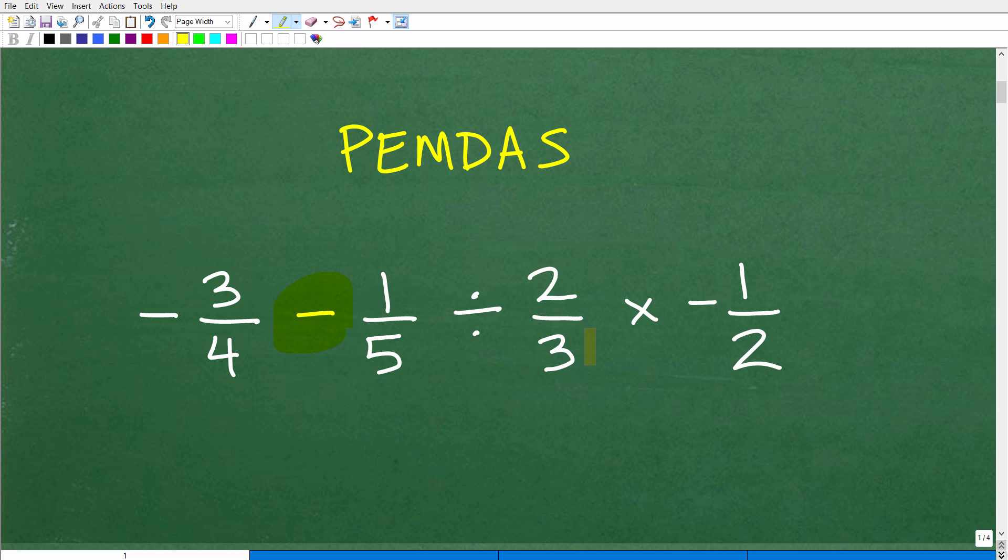Are we going to do the subtraction first? Are we going to do the multiplication first? Are we going to do the division first? Depending on what we do first, this is going to completely change our answer. If we make the wrong move first, we will get the answer wrong. In PEMDAS, the P stands for parentheses. So you want to look for anything that has parentheses that we have to do inside those parentheses. Do we have any parentheses here? No. The E stands for exponents or powers. Do we have any powers? No, we do not.